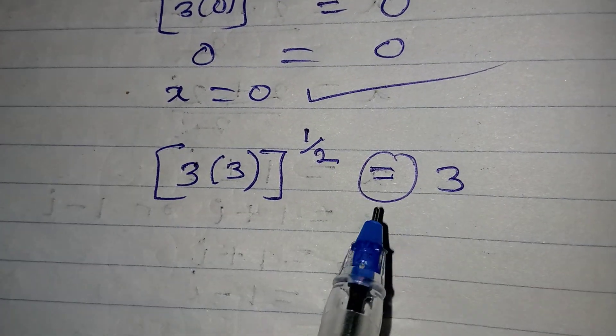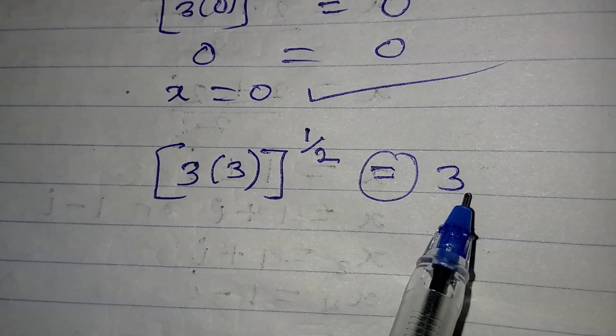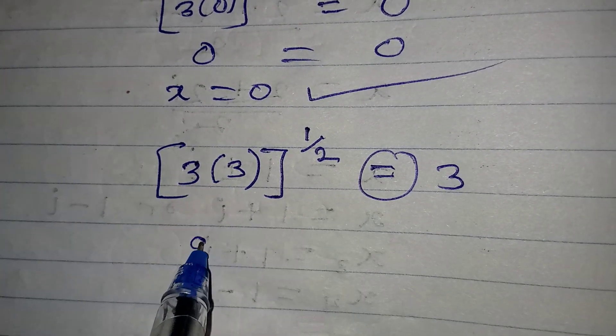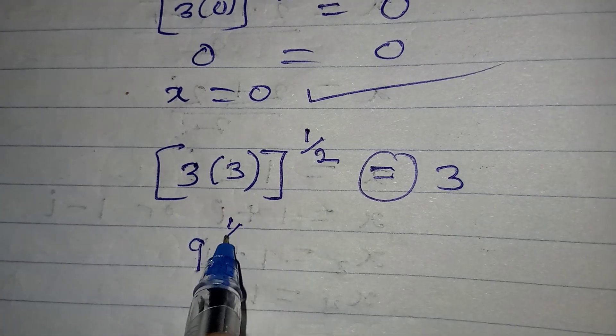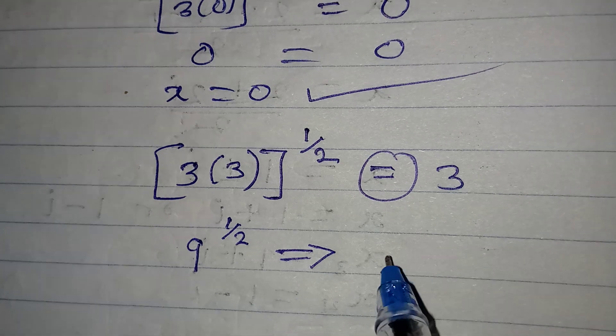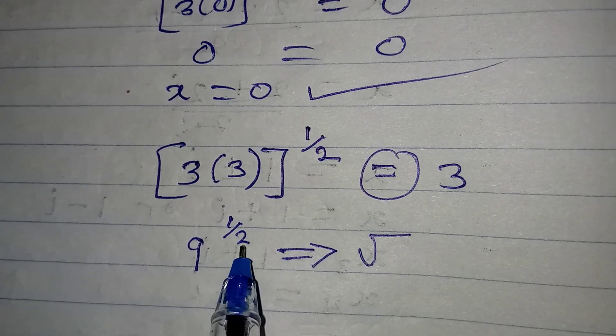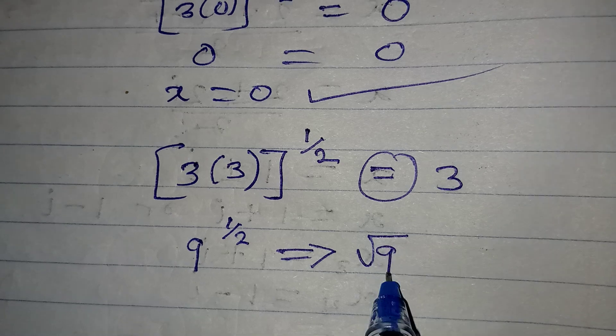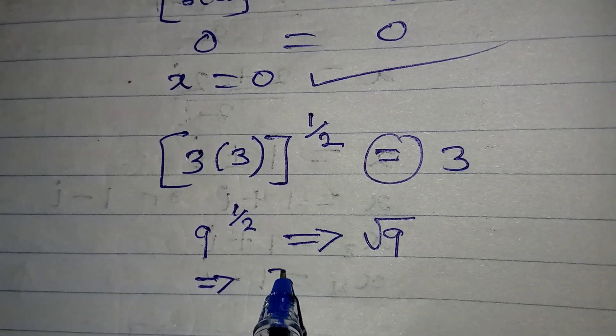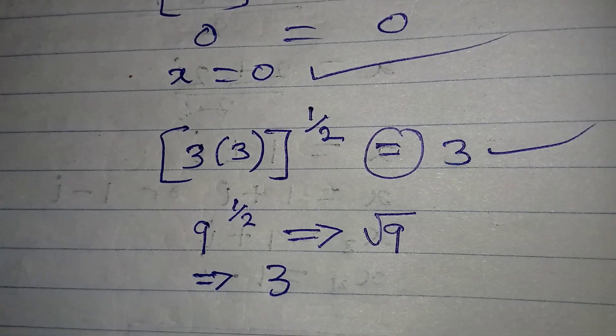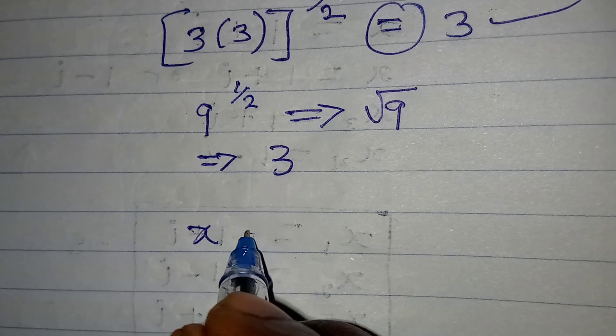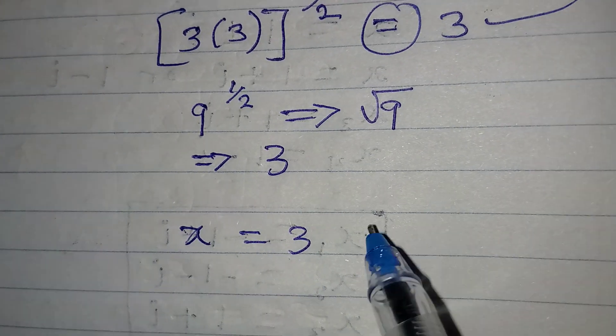The question is will this be equal to 3, and I think the answer should be yes. Because 3 times 3 here is 9, and then we have 9 to the power of 1/2. Now remember that 9 to the power of 1/2 is the same thing as square root of 9, and that will still give us 3, which is what we have on the right hand side.